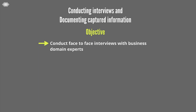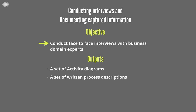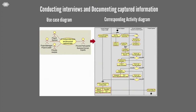There are at least four outputs that should be developed in these steps: a set of activity diagrams, a set of written process descriptions, an integrated activity diagram that represents an interconnected view of all involved business processes, and a time procedure chart. With support from the project manager, process analysts should meet and interview business domain experts who are knowledgeable about the target business processes, and if possible observe actual practices in the real environment to verify and validate their findings.